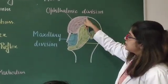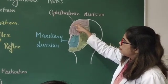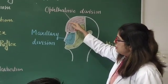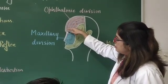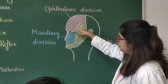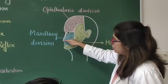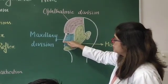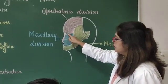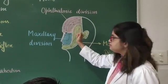The ophthalmic division supplies the part of the scalp, forehead, upper eyebrow, upper eyelid, medial part of the nose, tip of the nose, and the conjunctival surface of the upper eyelid.